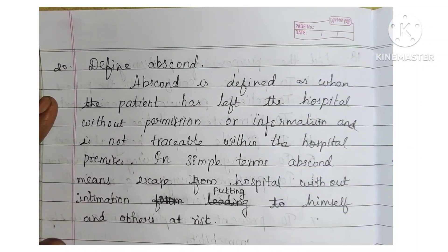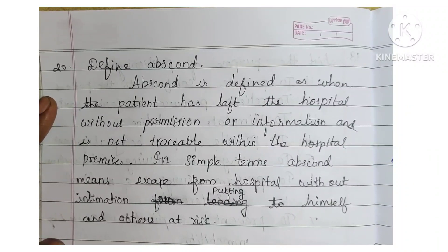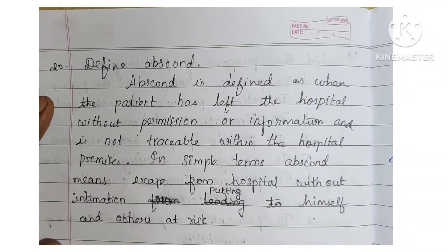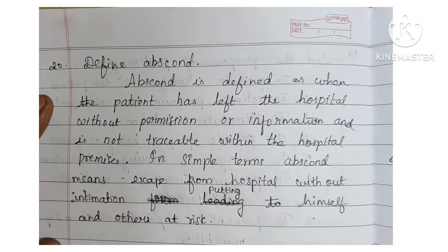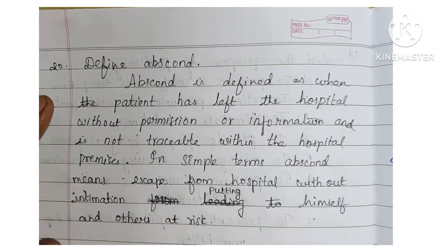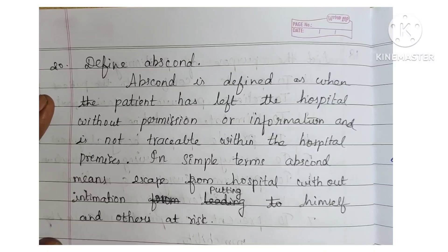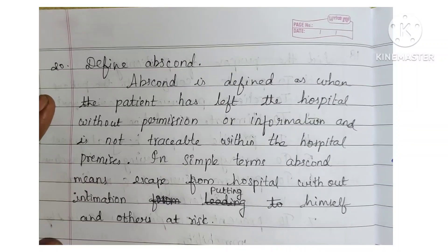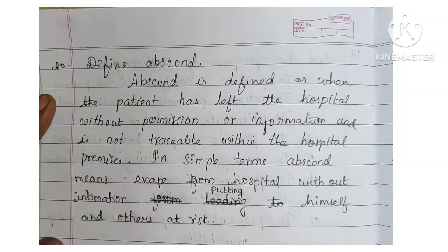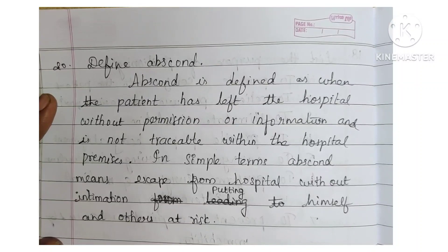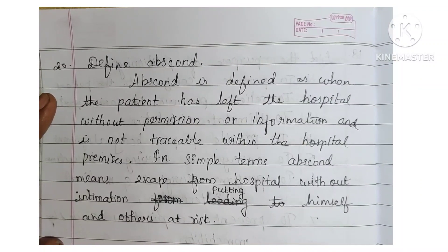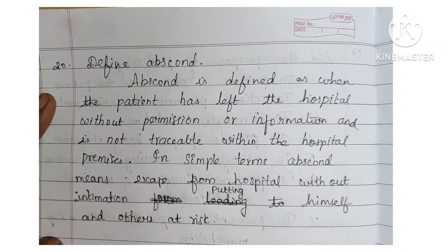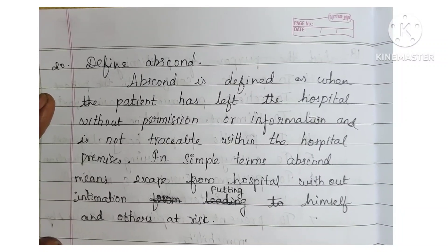Next: define abscond. Abscond is defined as when the patient has left the hospital without permission or information and is not traceable within the hospital premises. In simple terms, abscond means escape from hospital without intimation, putting himself and others at risk.